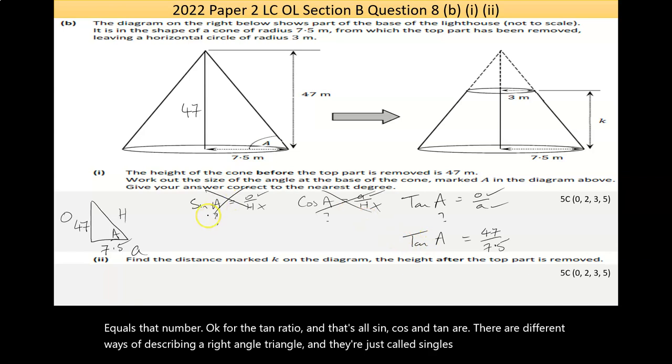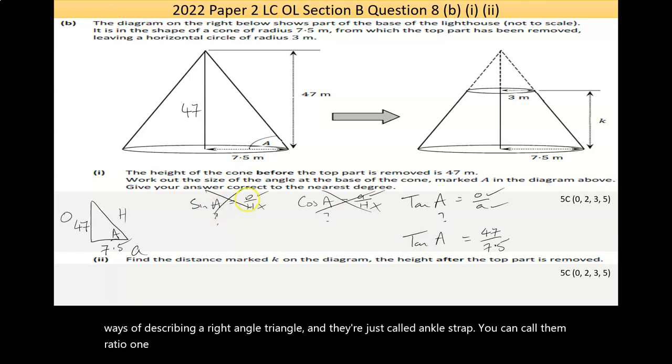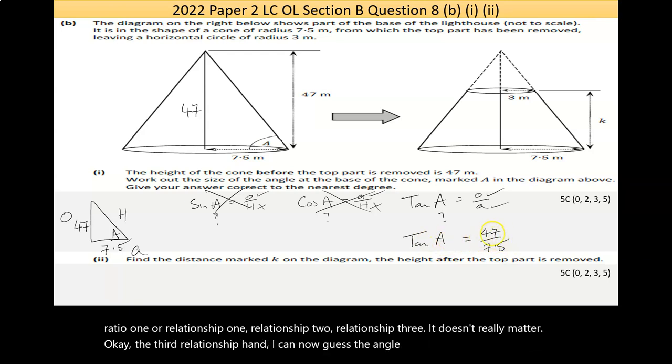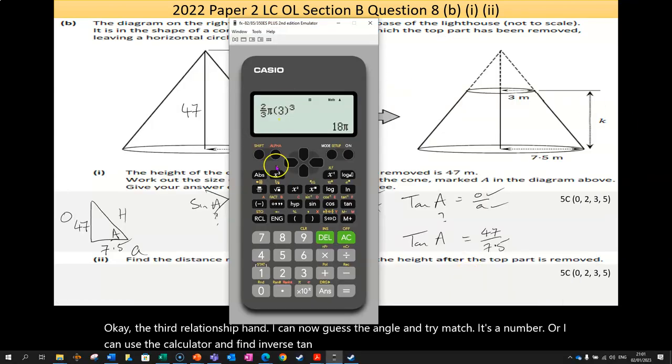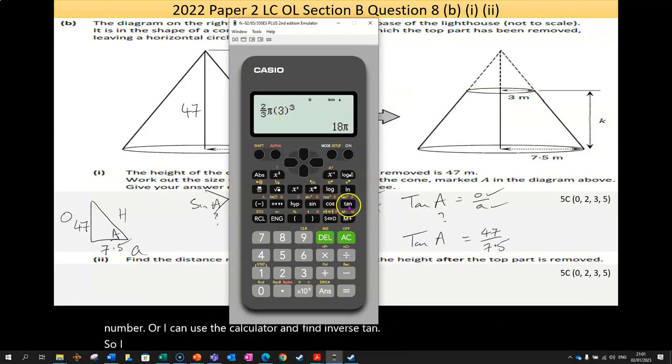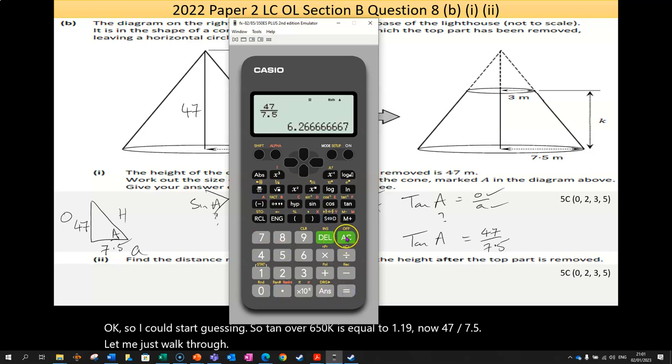And they're just called sine, cos, tan. You can call them ratio one, or relationship one, relationship two, relationship three. It doesn't really matter. The third relationship, tan, I can now guess the angle, and try to match it to the number. Or, I can use the calculator and find inverse tan. So, I could start guessing. So, tan of, let's say, 50, is equal to 1.19. Now, 47 over 7.5, let me just work that out, is 6.2, say 6.2. So, I'm going to go tan of, let's go 60, no, tan of 80. So, it's a big angle.